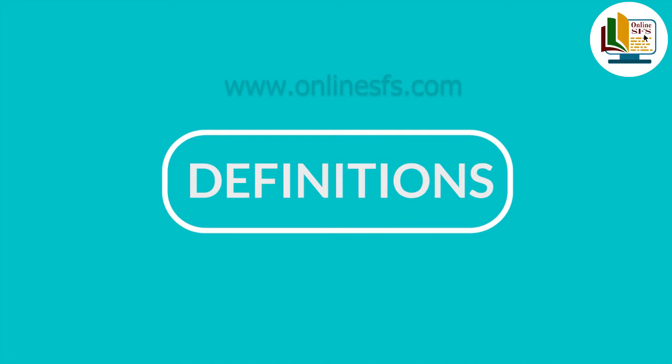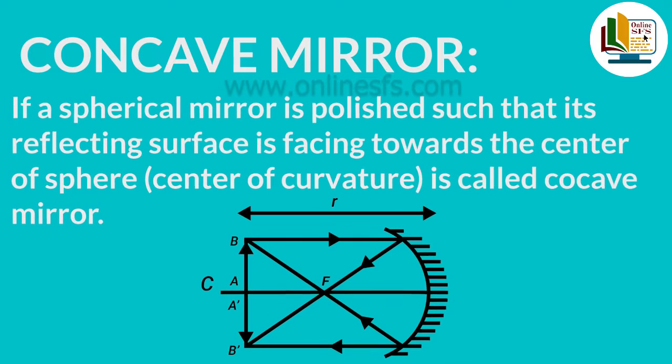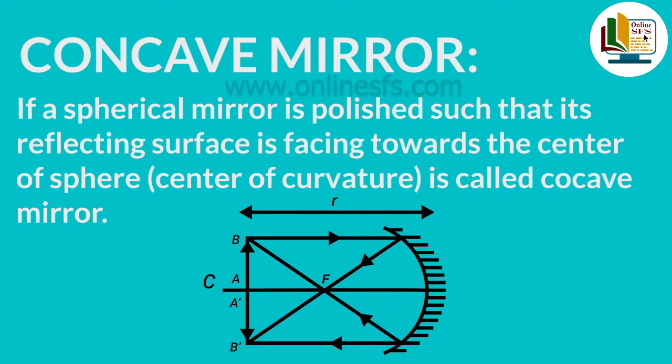Let's first study a few definitions. Concave mirror: If a spherical mirror is polished such that its reflecting surface is facing towards the center of curvature, it is called a concave mirror. In simple words, agar mirror ki inner surface shiny ho, toh aise mirror ko hum concave mirror kehte hain.